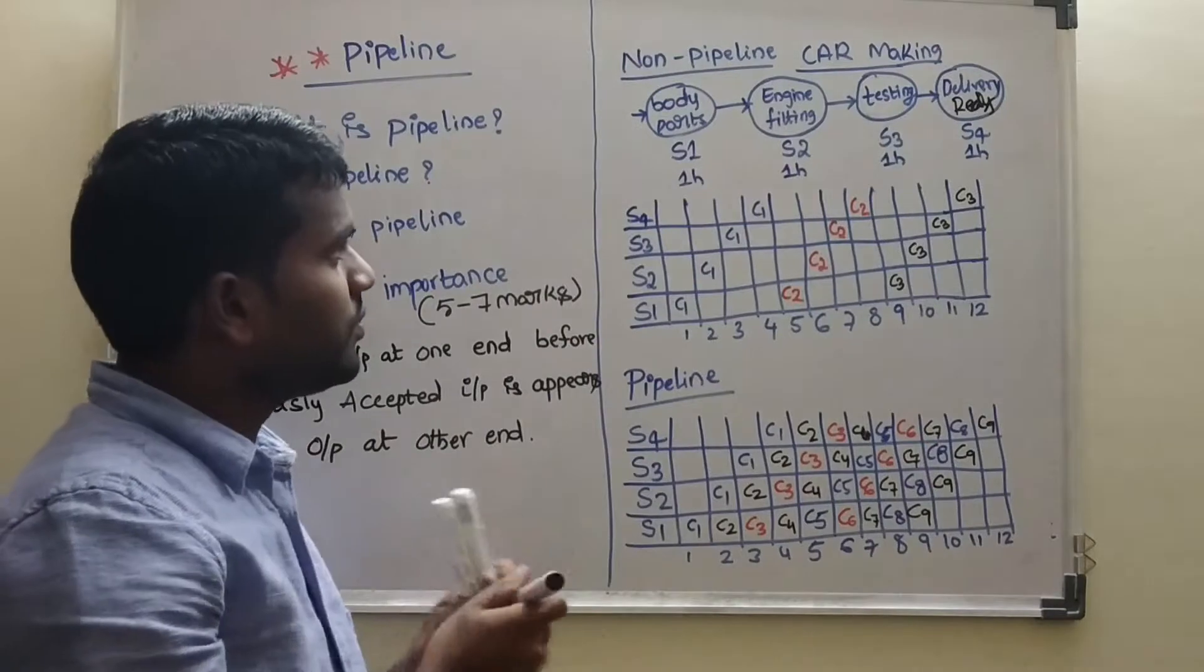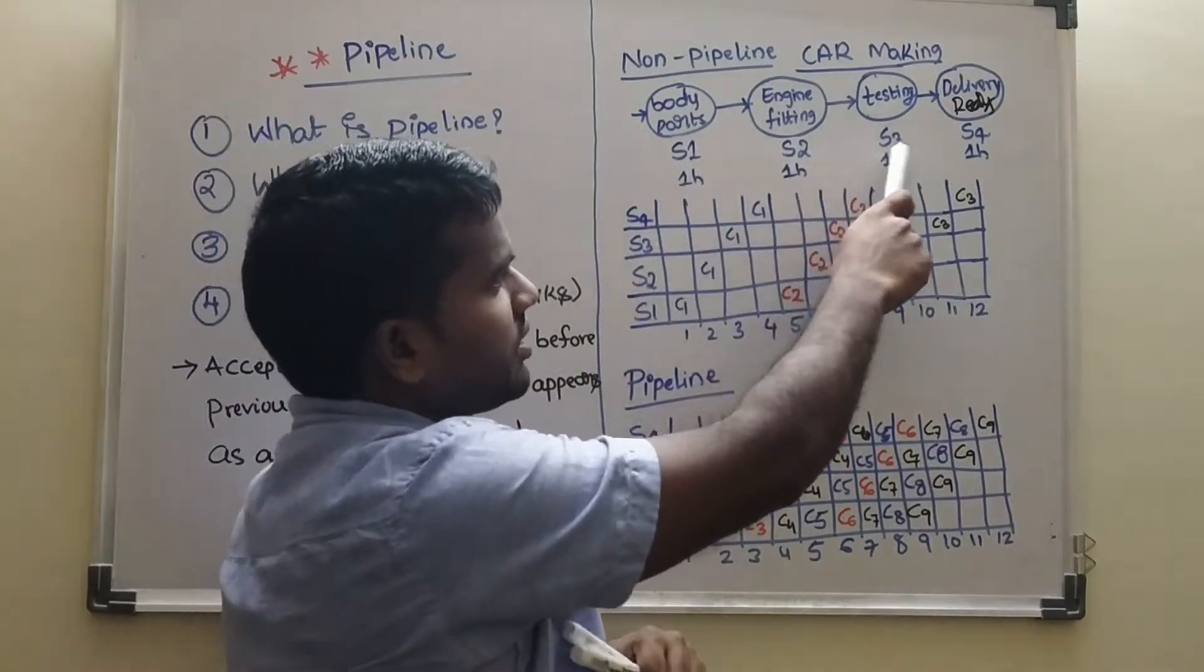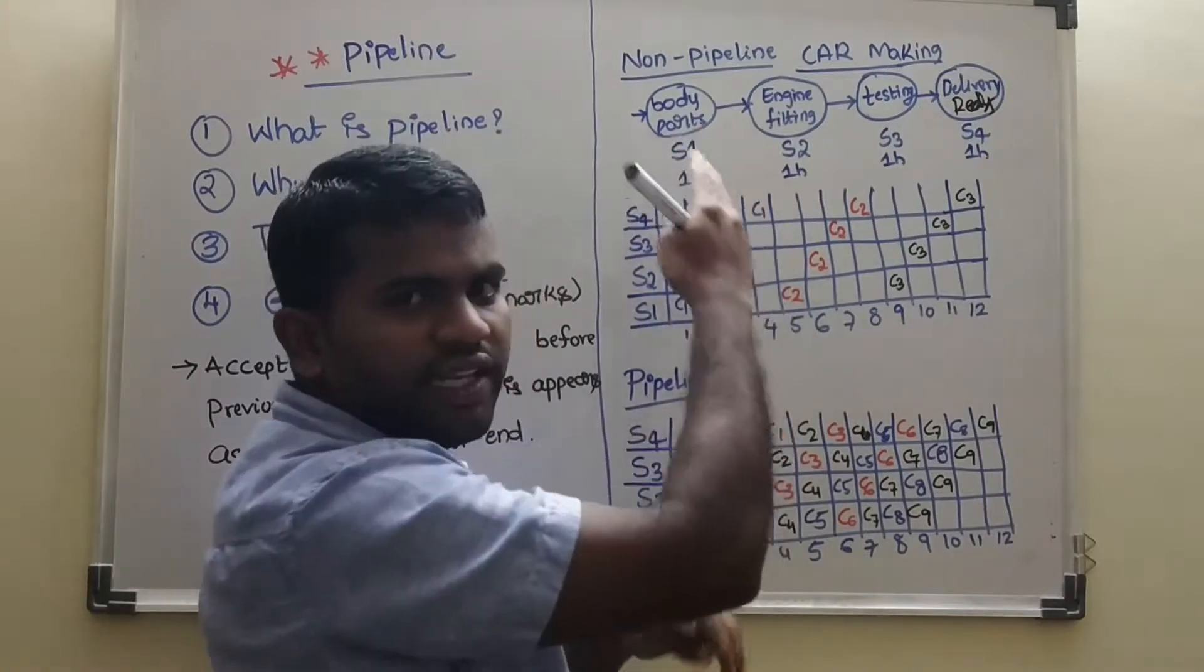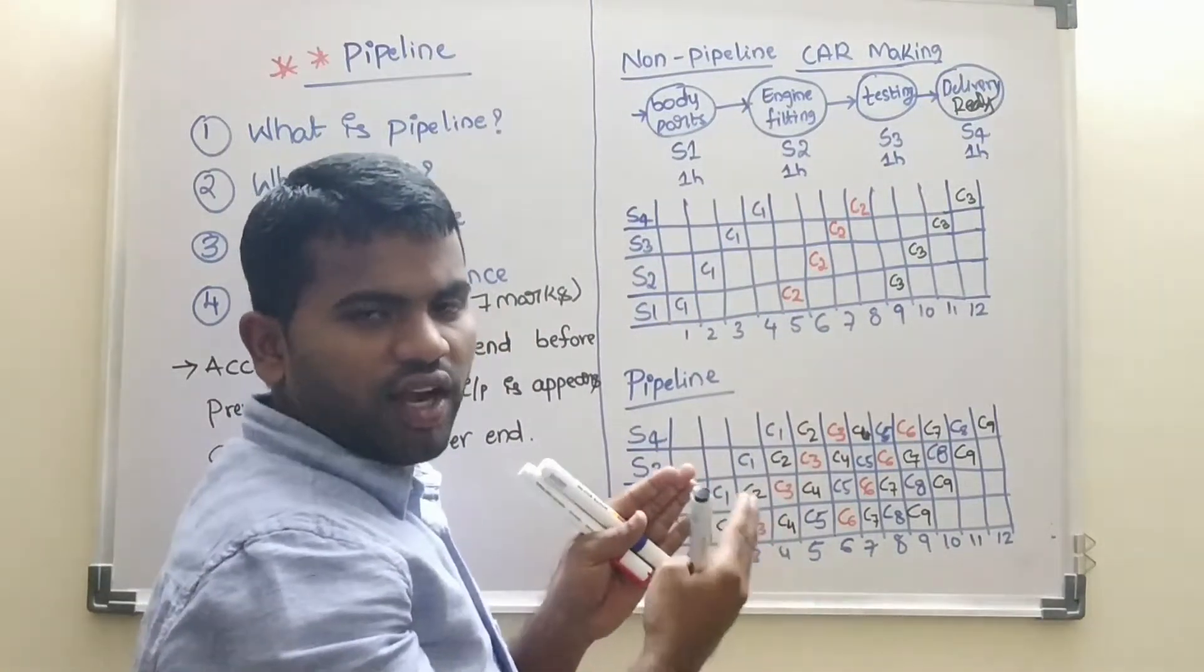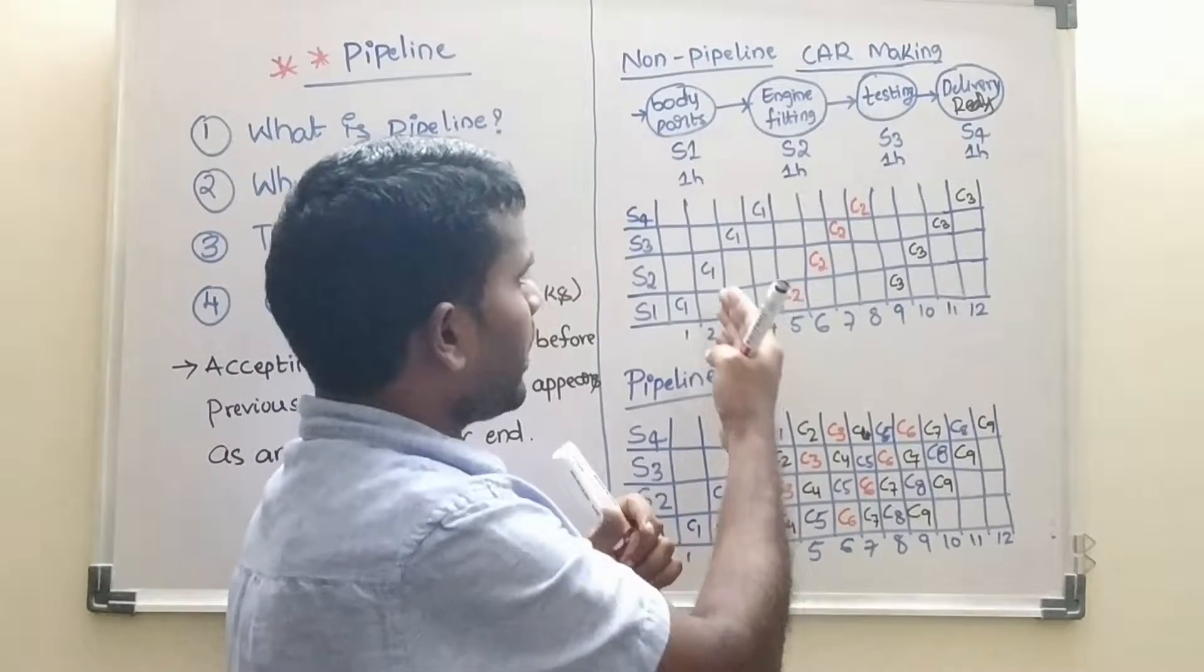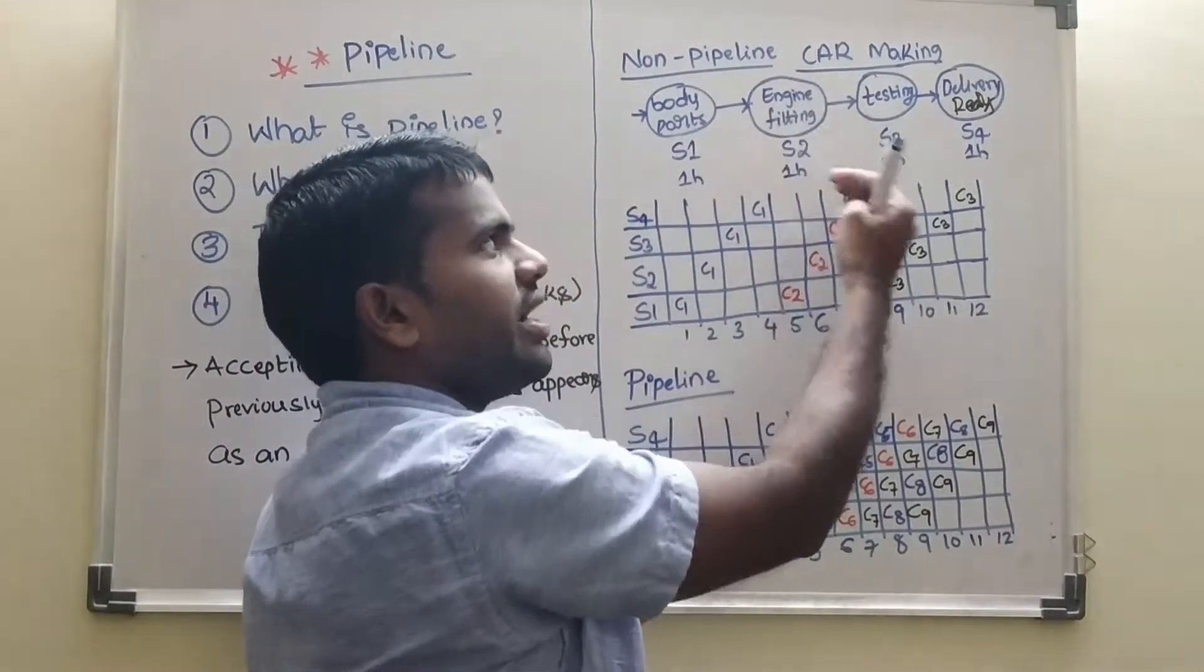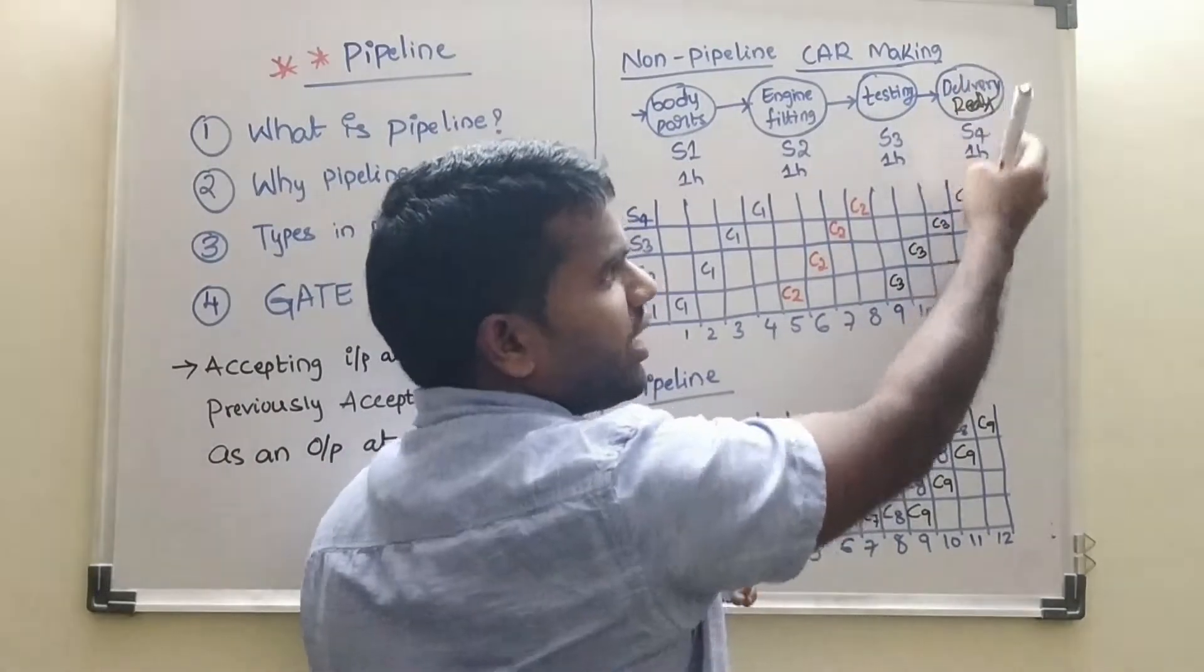So here, stage 1, stage 2, stage 3, stage 4. In each stage, one car is taking 1 hour for making all body parts together and then engine fitting and testing then ready to deliver in 4 stage.